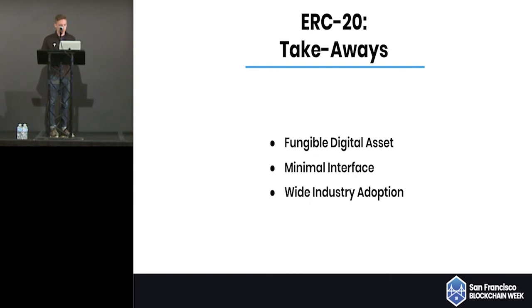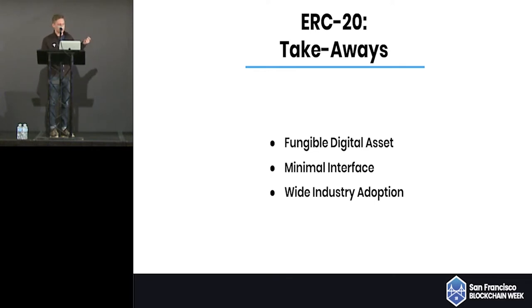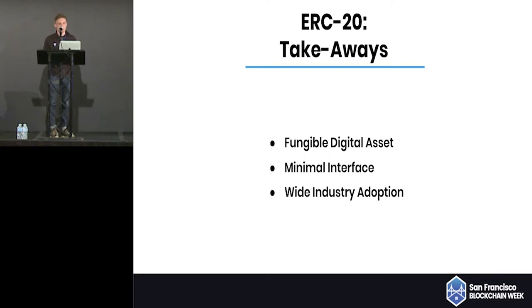ERC-20 recap: we have the ability to represent a fungible digital asset on the Ethereum blockchain, a minimal interface that's relatively simple to implement with only six functions and two events, and a standard that's already widely adopted by issuers, wallets, and exchanges.